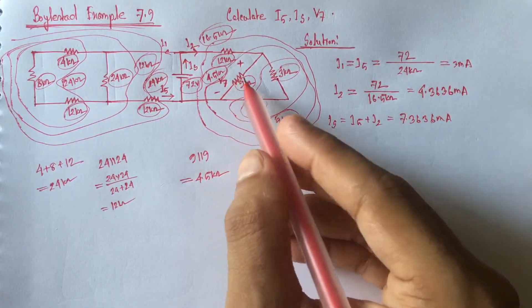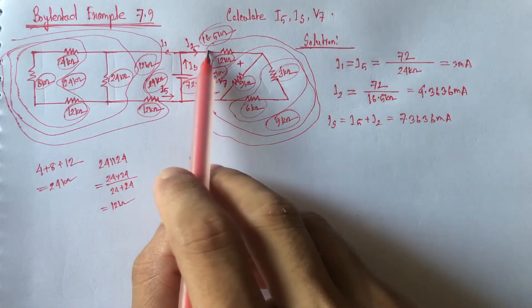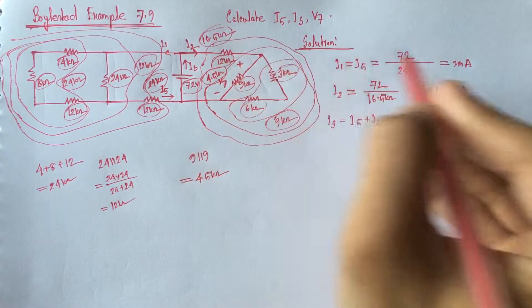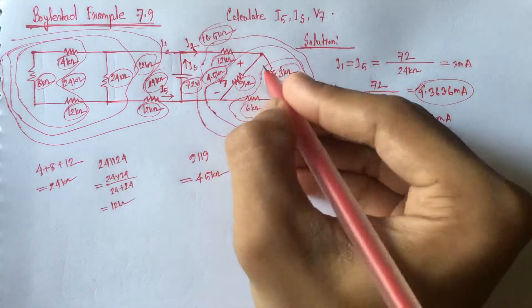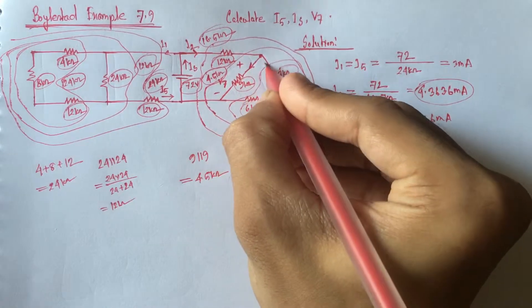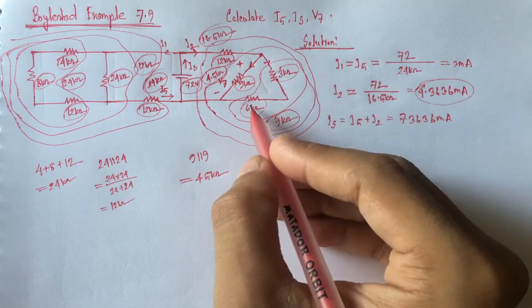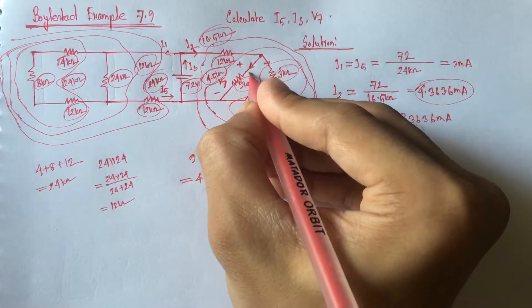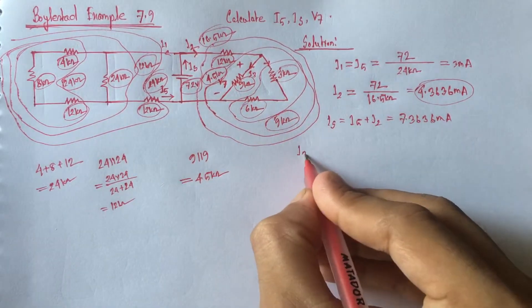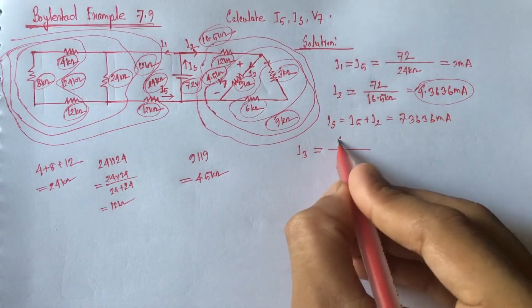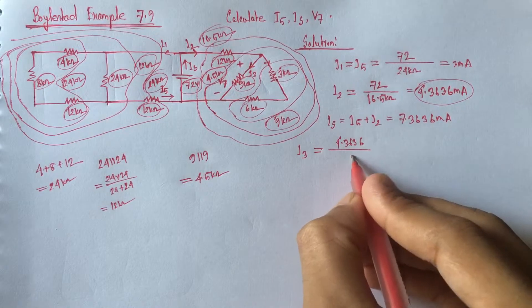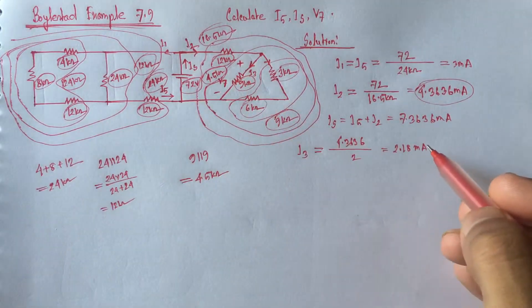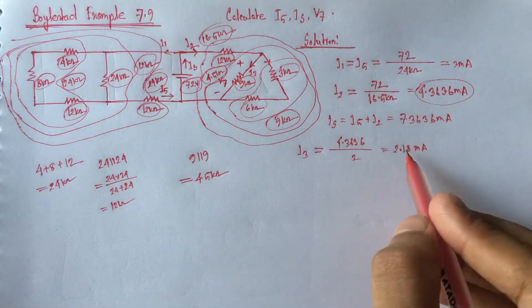Now we have to identify the voltage V7. We see that I2 current of 4.3636 mA is flowing through this path. At this junction, the 4.3636 mA will be divided into two paths — path 1 and path 2. In both paths the resistances are equal: 9 Kiloohm and 9 Kiloohm. So the current will be divided equally. If we let this be I3, then I3 equals half of the total current: 4.3636 divided by 2, that is 2.18 mA. This I3 current can also be found using the current divider rule, which also gives 2.18 mA.